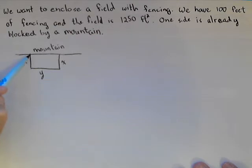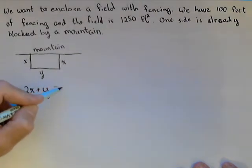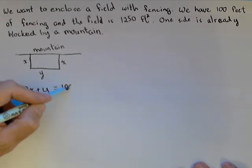Now, we have 100 feet of fencing that's going to go along these three sides. So, x plus x plus y, or 2x plus y, gives us our total fencing, which is 100 feet.